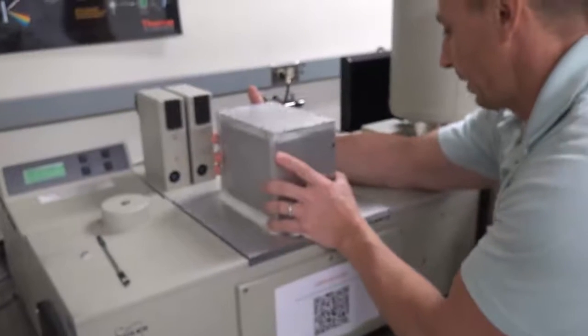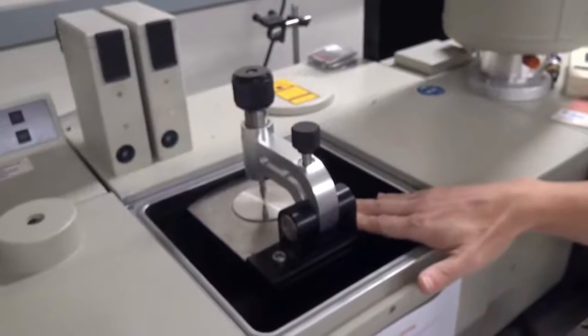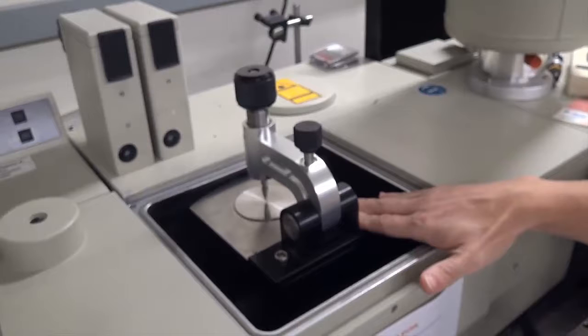After the system is vented, you can carefully lift the silver lid straight up and set it on the table. Be careful not to hit the arm under the lid because the lid is pretty heavy. Now that the lid is off, we can see the Diamond ATR.